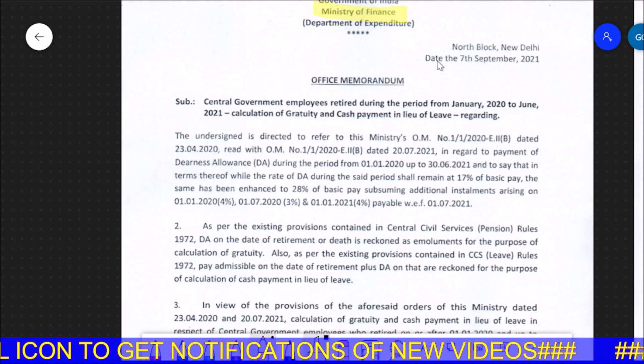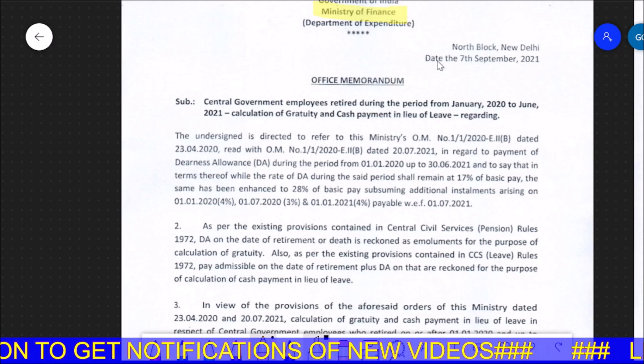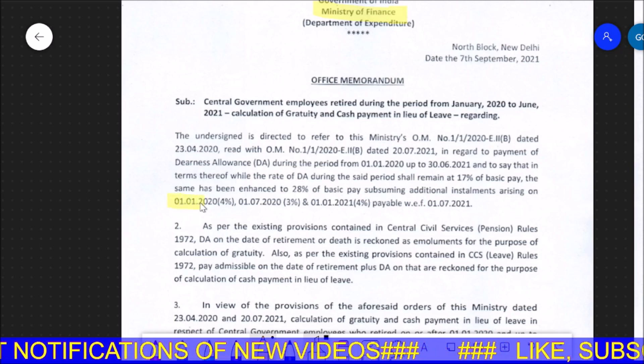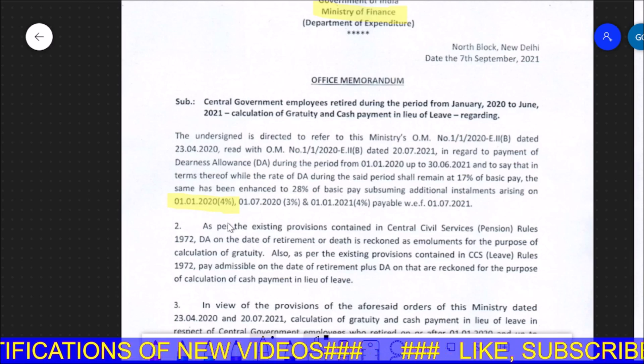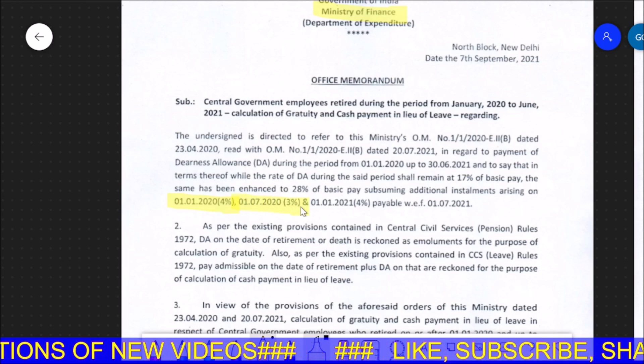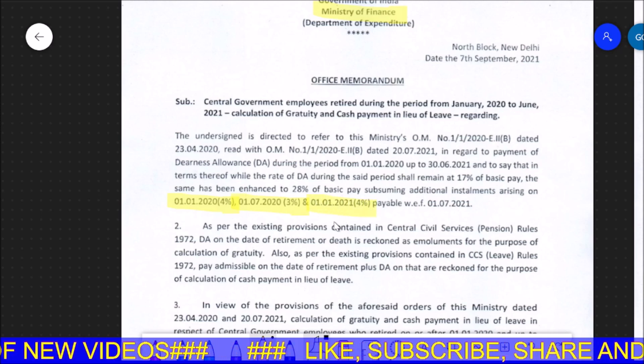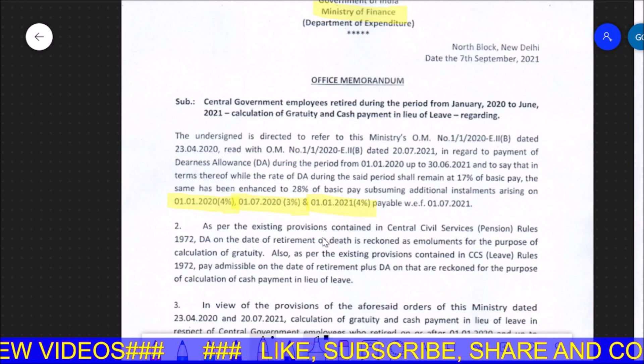So now the government has given a little relaxation and told us that our calculation was 4% DA on January 1, 2020. On July 1, 2020 it was 3% increase, and on January 1, 2021 it was 4%.